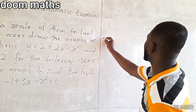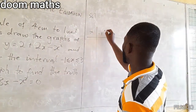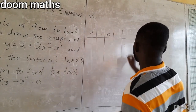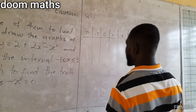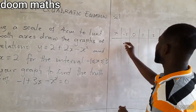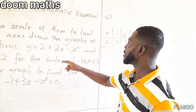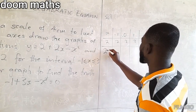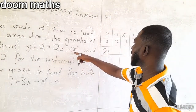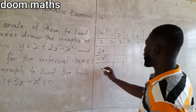So let me set up the x values. x is starting from negative 1, then 0, 1, 2, and then 3. From x we take the relation: the constant 2 running through, followed by 2x — that is 2 multiplying x — and then also negative x squared.